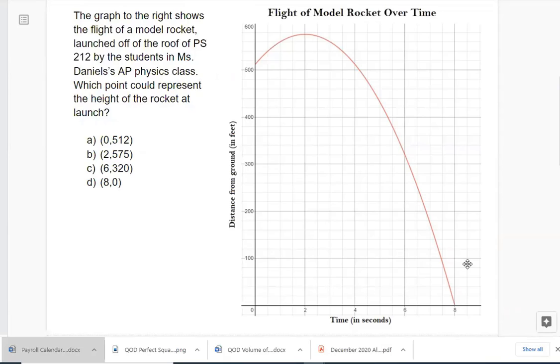We're going to look at it both ways. So first of all, let's make sure we know what this question is asking us to do. It says, which point could represent the height of the rocket at launch? You're not going to be able to understand this question unless you understand what it means to launch. We're looking for the height of the rocket at launch. We better understand what it means to launch. So when I say I'm launching the rocket, what am I saying?